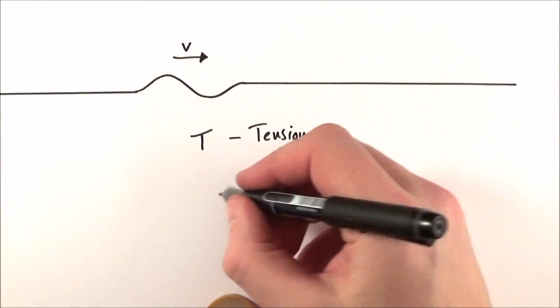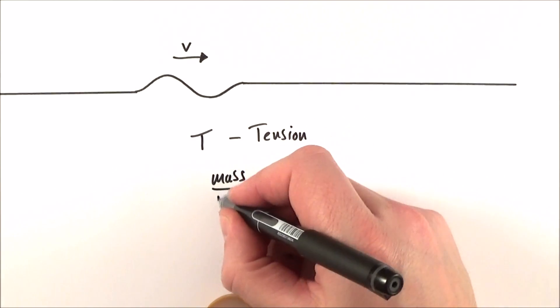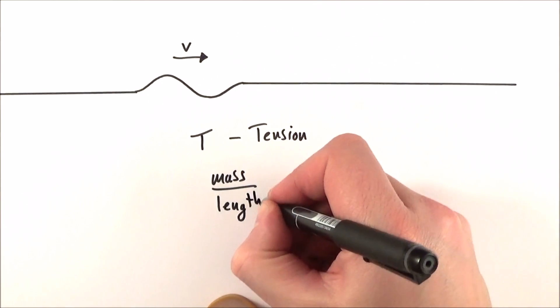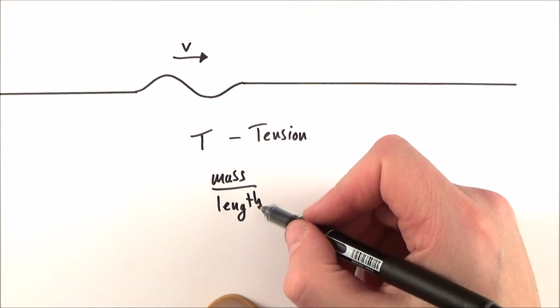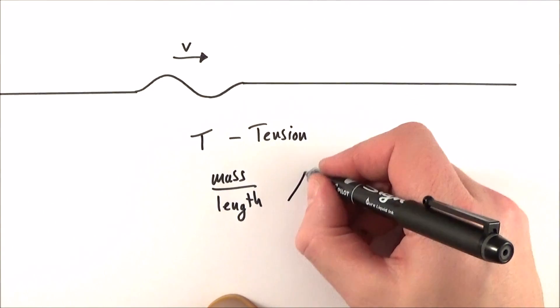And what we can then look at is the ratio of the mass to the length of that string. And this mass to length ratio is given the symbol mu.